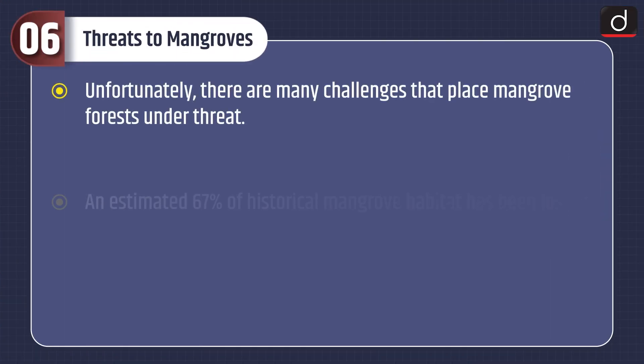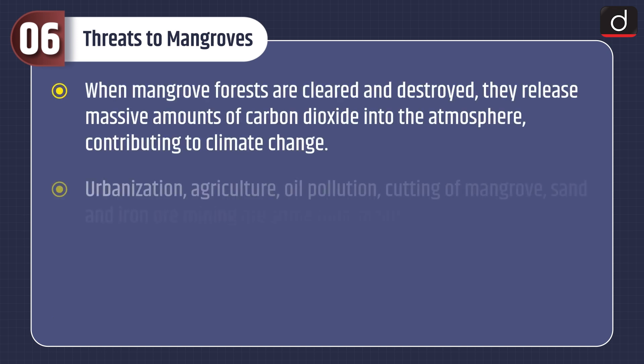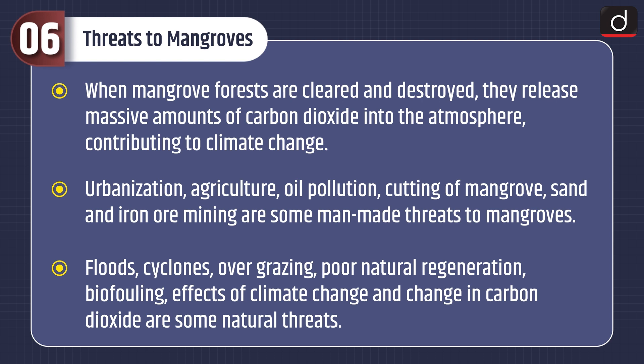Threats to mangroves: unfortunately, there are many challenges that place mangrove forests under threat. An estimated 67% of historical mangrove habitat has been lost or degraded worldwide, with 20% occurring since 1980. One of the biggest threats to mangroves is the tourism industry. When mangrove forests are cleared and destroyed, they release massive amounts of carbon dioxide into the atmosphere, contributing to climate change. Urbanization, agriculture, oil pollution, cutting of mangroves, and iron ore mining are some man-made threats. Floods, cyclones, overgrazing, poor natural regeneration, biofouling, effects of climate change, and change in carbon dioxide are some natural threats.